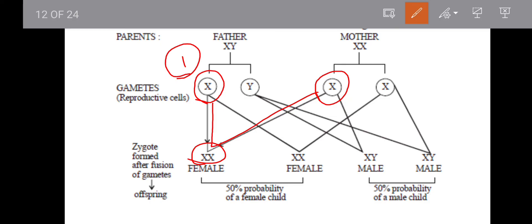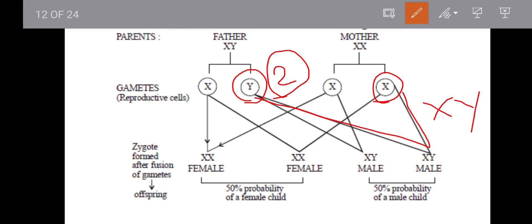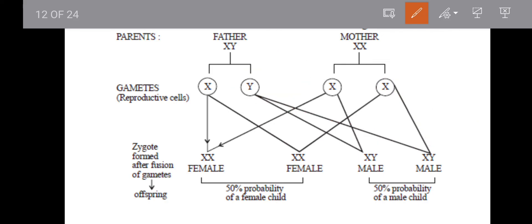When X-containing sperm fuses with X-containing egg, the result is an XX zygote, which develops into a female. When Y-containing sperm fuses with X-containing ovum, the chromosome condition is XY, meaning the organism is male. So whether offspring are male or female is determined by the presence of the Y chromosome.